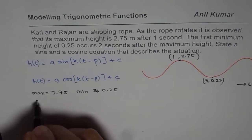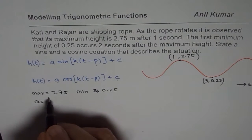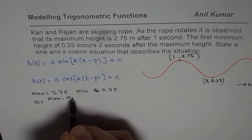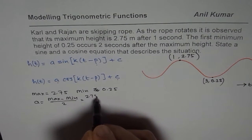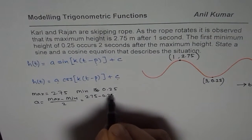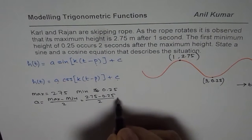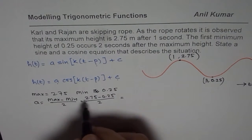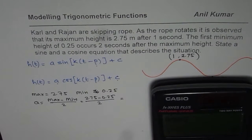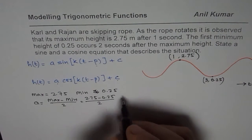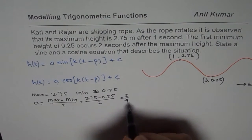A from here is maximum minus minimum divided by 2. That is 2.75 minus 0.25 divided by 2. You may use the calculator also. We have 2.75 minus 0.25 equals, divide by 2. A equals 5 over 4.